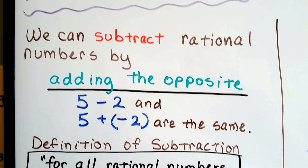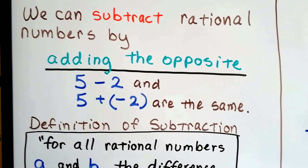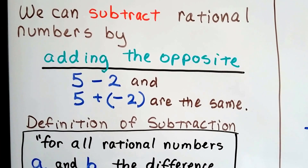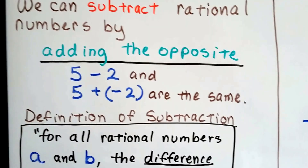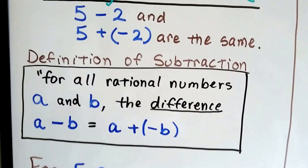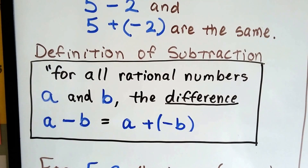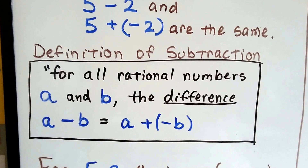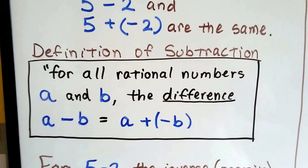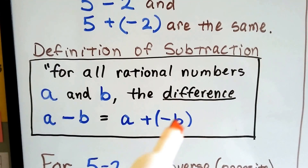We can subtract rational numbers by adding the opposite. 5 take away 2 and 5 plus a negative 2 are the same. If we take away a positive 2 or add a negative 2, we're doing the same thing. The definition of subtraction says for all rational numbers a and b, the difference a minus b is equal to a plus a negative b. We've got a and we're taking away a positive b, which is the same thing as a plus a negative b.